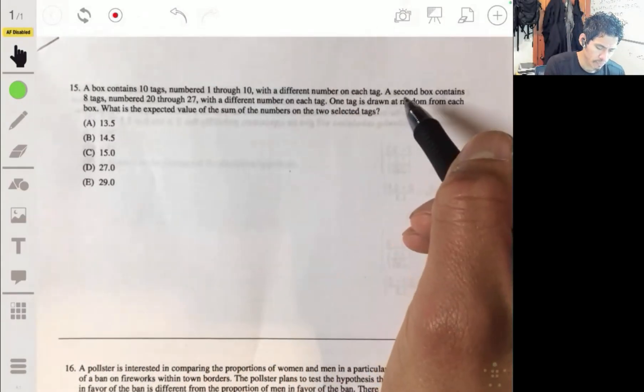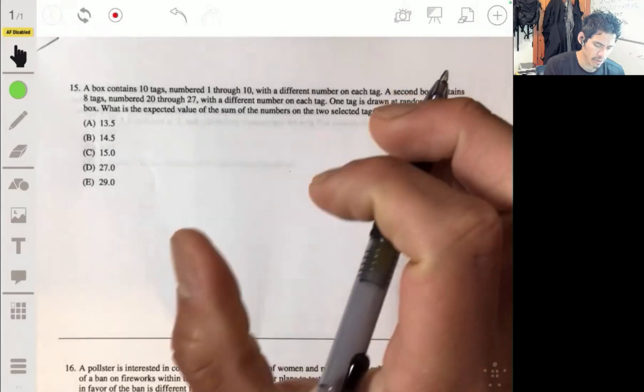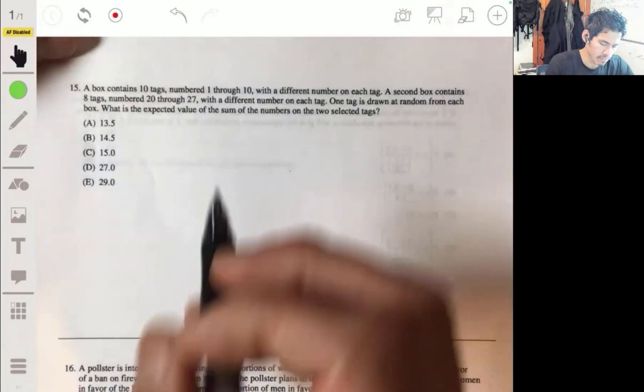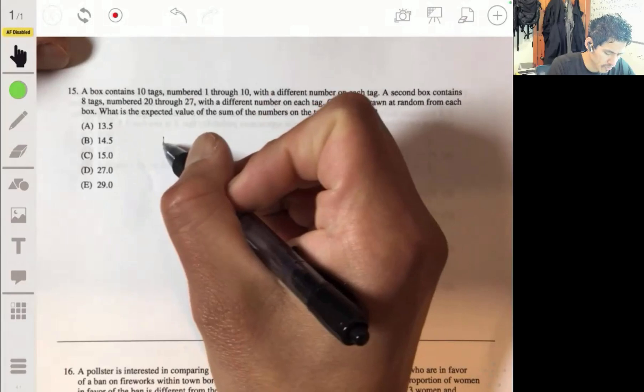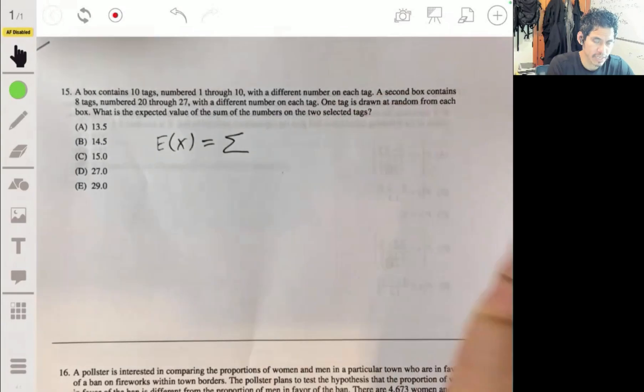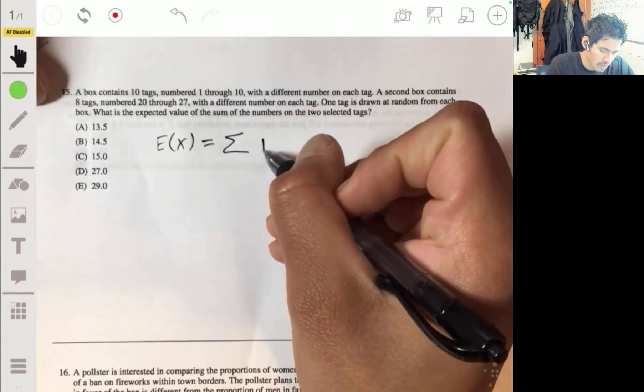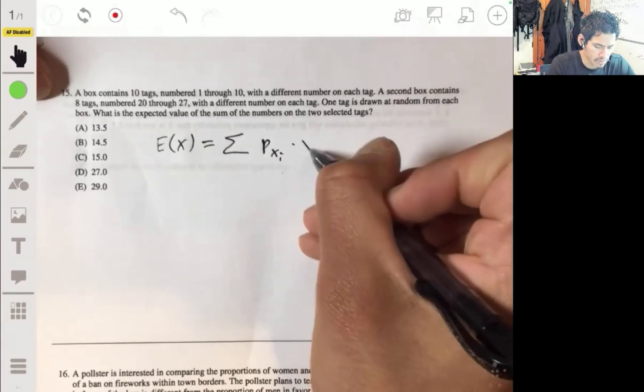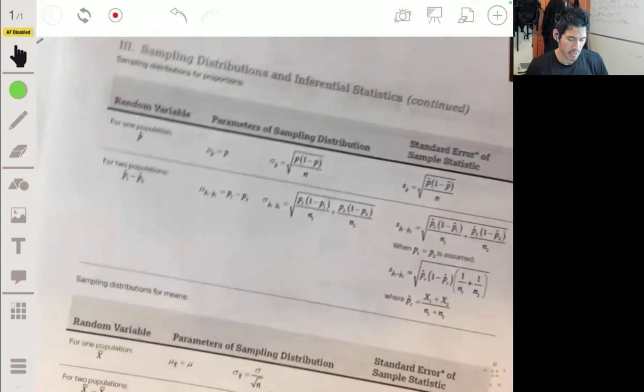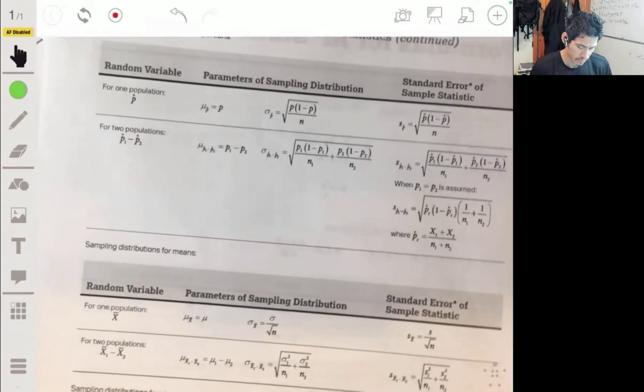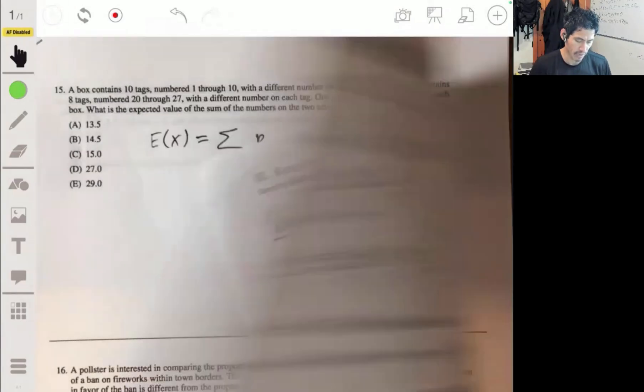What's the expected value of the sum of the numbers on the two selected tags? So you're essentially going to find the means, but remember these are random variables, so it's like a weighted mean. If you remember this formula, the expected value e(x) equals the sum of the probability of x_i times x_i. And remember, you have a formula sheet in case you forget it.